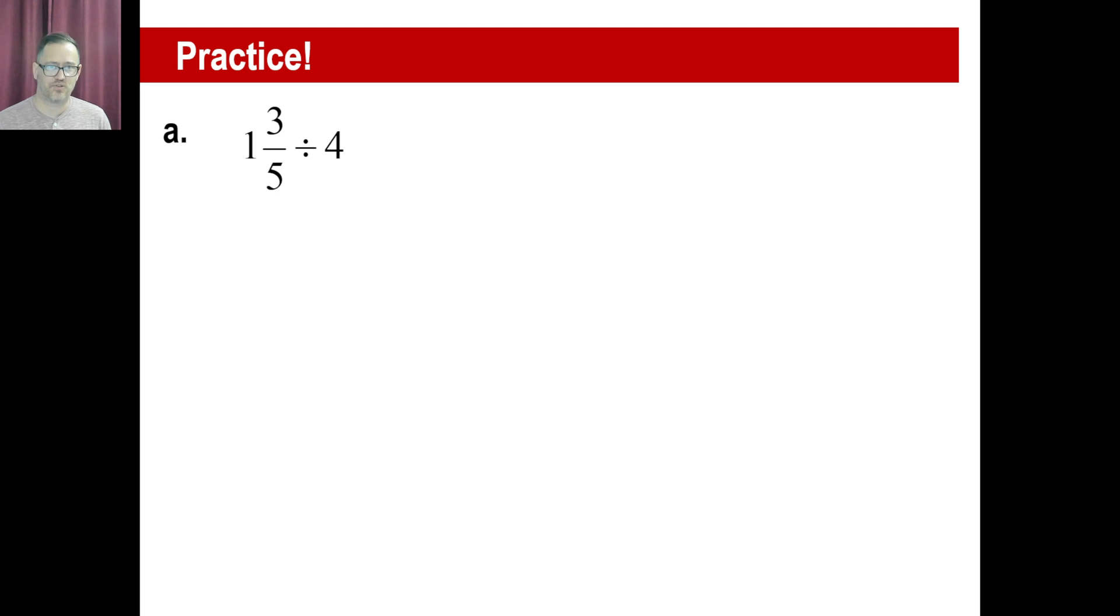Go ahead and pause it and try A. Okay, A looks like this, 8/5, and we're not going to divide by 4 over 1, we're going to multiply by 1 over 4. So we have 8 and then 4, that goes 1 time, and then that goes 2 times, and then the answer is 2/5.